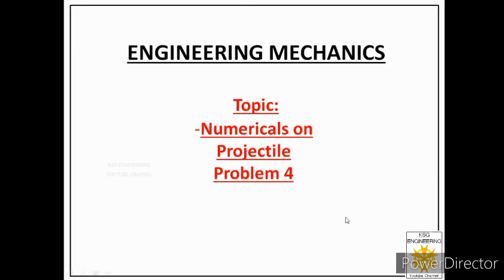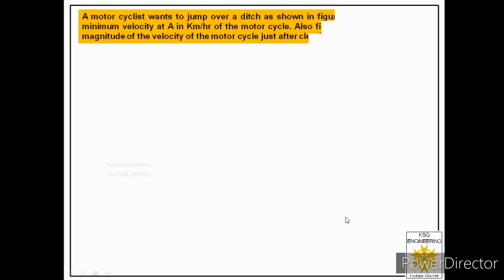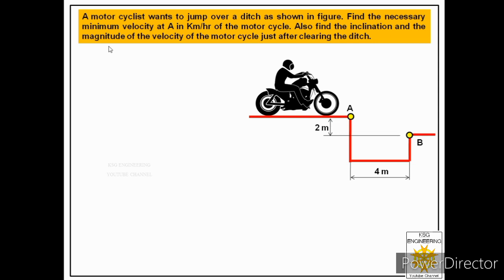Welcome students. Today we will solve the fourth problem on projectile motion. We are given one statement: a motorcyclist wants to jump over a ditch as shown in the figure. Find the necessary minimum velocity at A in kilometers per hour of the motorcycle. We are given this situation — a motorcyclist wants to jump over this ditch from point A to point B.